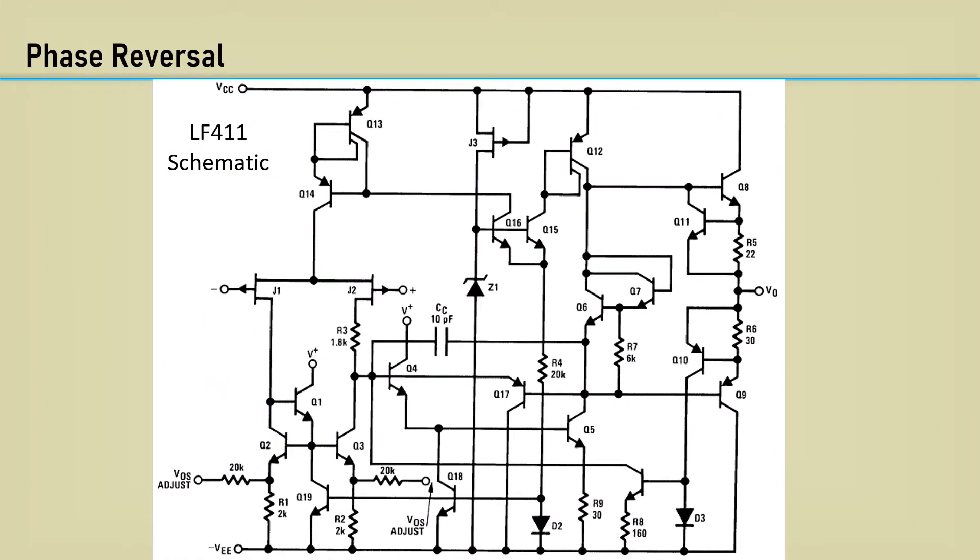Here's what's happening inside. Normally, the tail current caused by Q13 and Q14 is evenly split between J1 and J2. When the positive input goes sufficiently lower than the negative input, J2 becomes forward biased, and it turns off Q4.